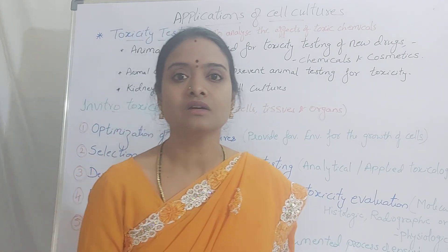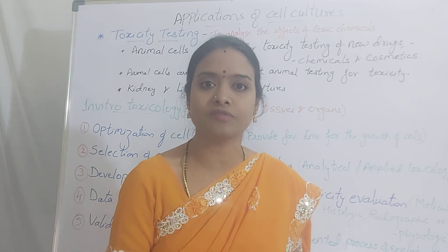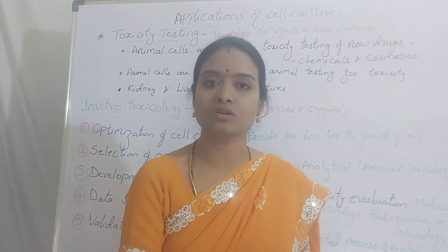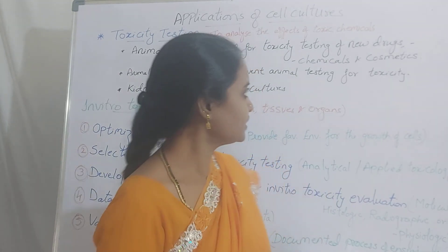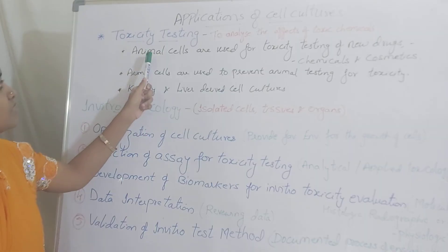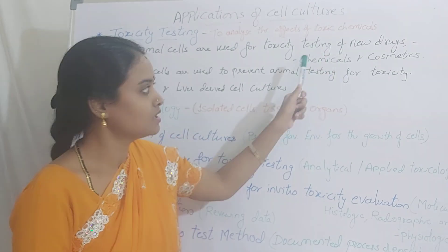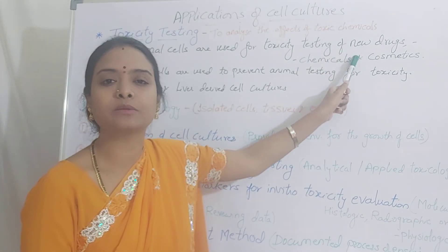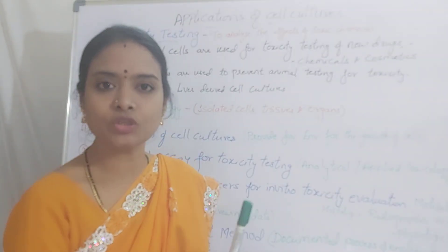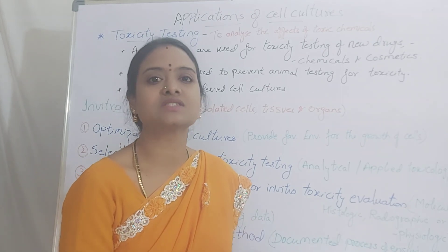You can know what is the range — how much dose has to be given. In the case of therapeutic drugs, what concentration must be given to adults and what concentration must be given to children. So here in toxicity testing, animal cells are used for testing new drugs. It can be a chemical or it can be cosmetics. Whatever new compound has to be marketed must go through toxicity testing.